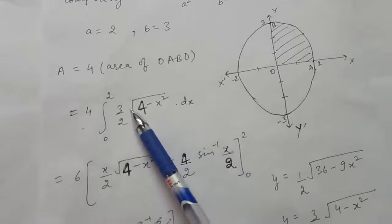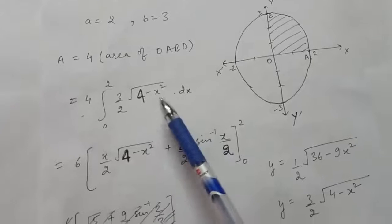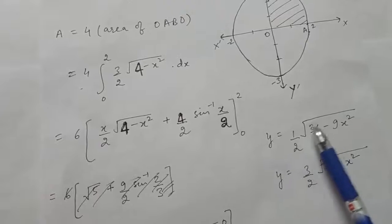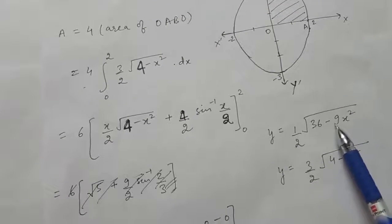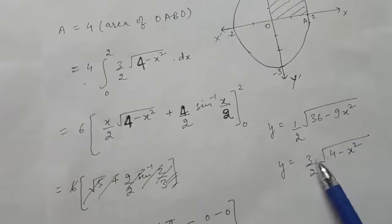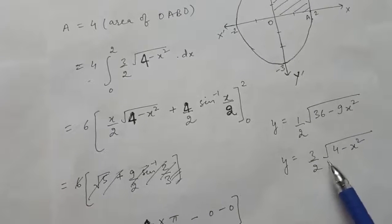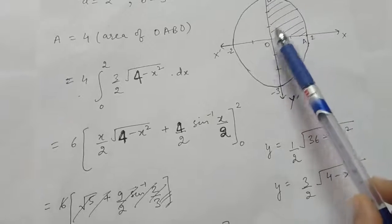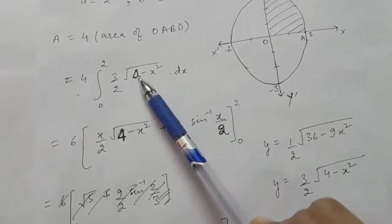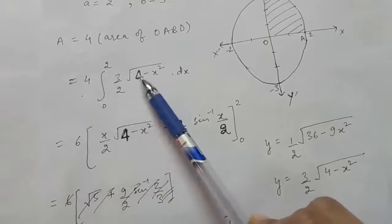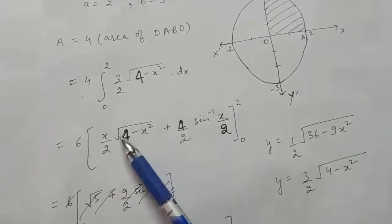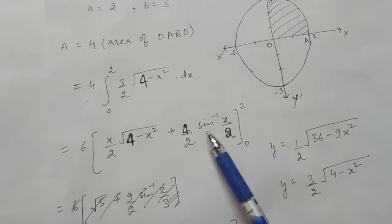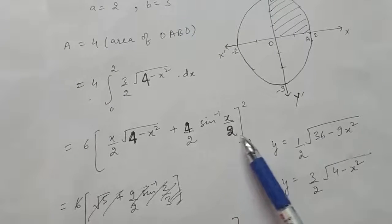You get the function as (3/2)√(4 − x²). When you find y in terms of x from the ellipse equation and take out √9 = 3, you get y = (3/2)√(4 − x²). We take the positive value since y is positive in the first quadrant. Now solve: the integral of √(4 − x²) is (x/2)√(4 − x²) + (a²/2) sin⁻¹(x/a), where a = 2, with limits from 0 to 2.